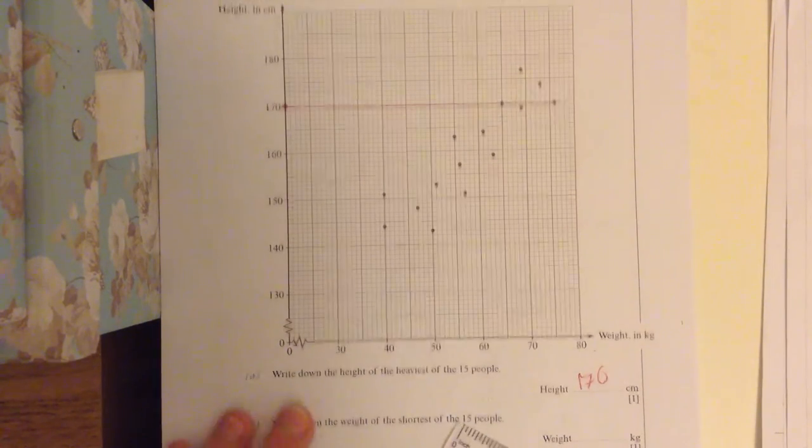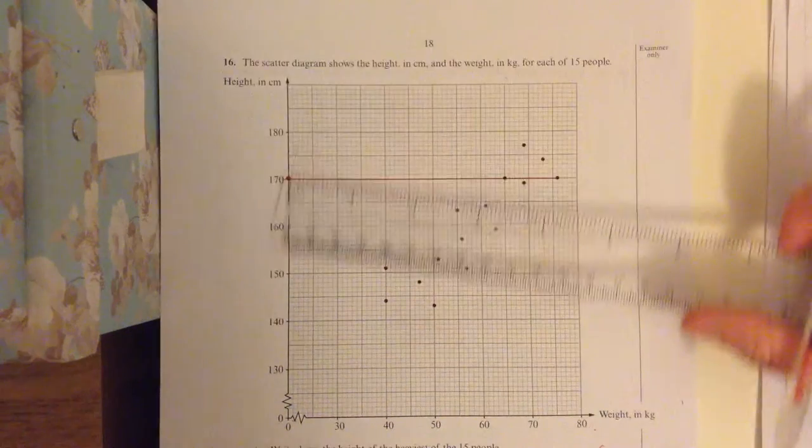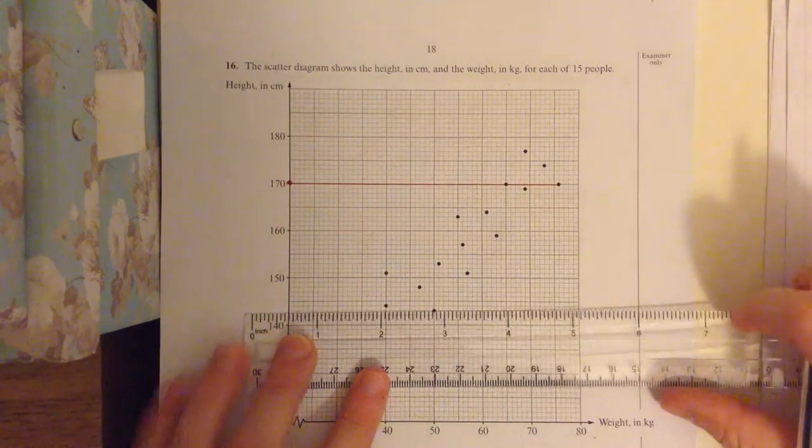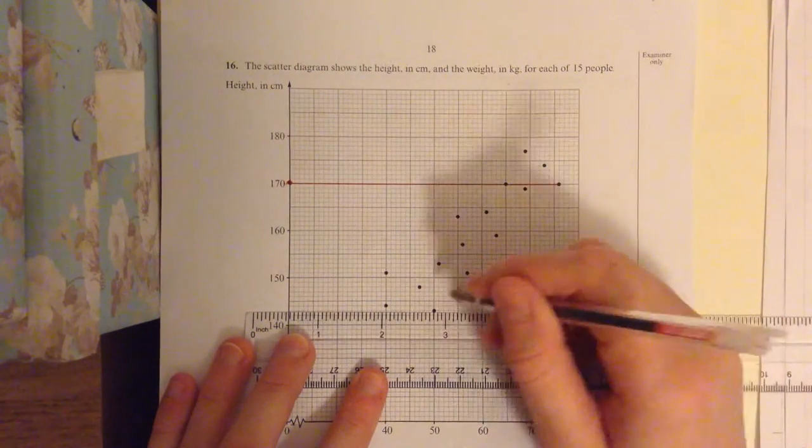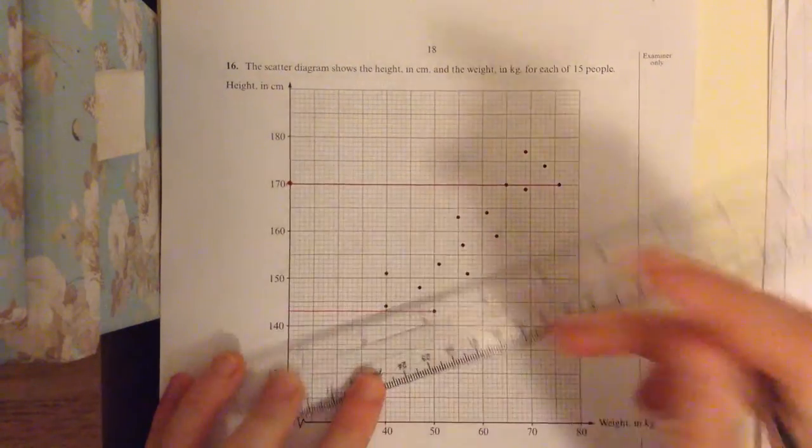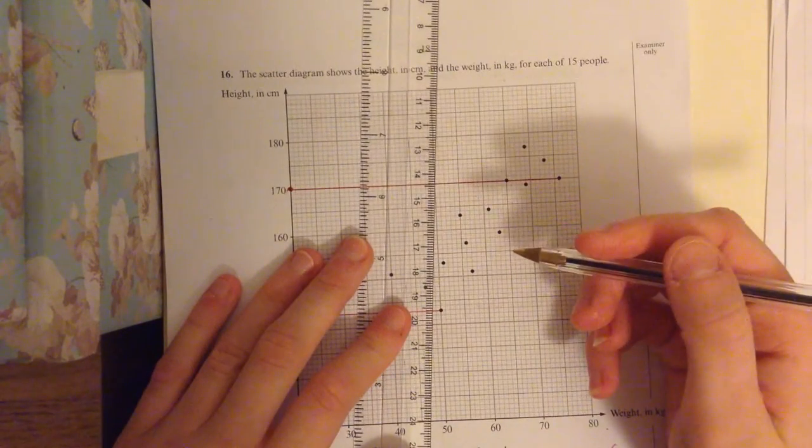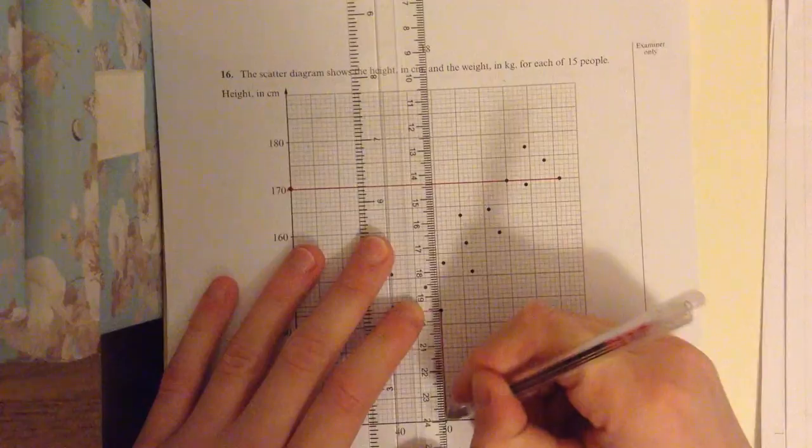Write down the weight, the shortest. So we use this time the height. Find the shortest person. And it's going to be there. Then read down.